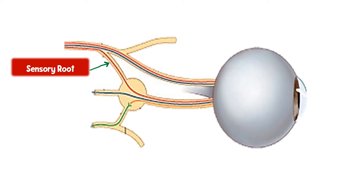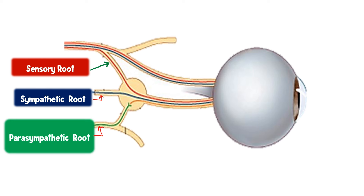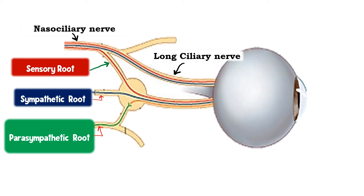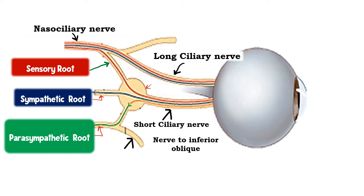Let us understand the labeling of this diagram. The sensory root is labeled here, then the sympathetic root, and then the parasympathetic root. This nerve is the nasociliary nerve, which is a branch of the ophthalmic division of the trigeminal nerve. The nasociliary continues as the long ciliary nerve, and another nerve coming out of the ciliary ganglion is the short ciliary nerve. The nerve coming from the inferior division of the oculomotor nerve is the nerve to the inferior oblique.